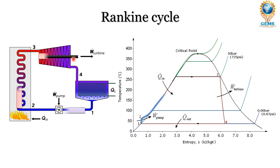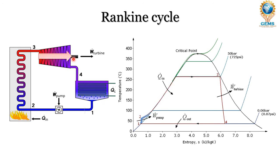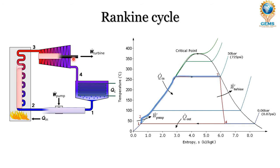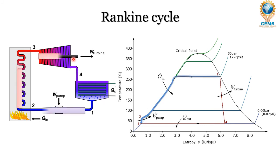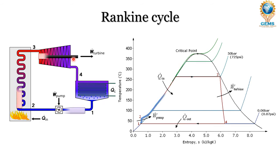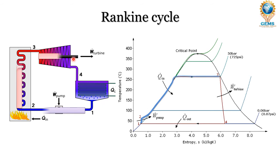The pressure gets reduced and simultaneously the temperature also gets reduced. Most probably some condensation also happens, so the exit point of the turbine will be in the form of a mixture — a mixture of dry vapor and moisture.